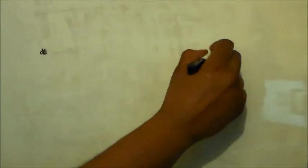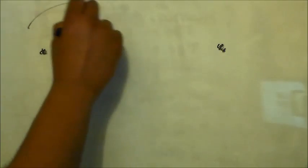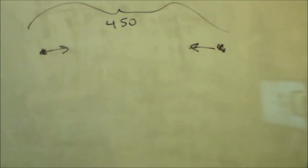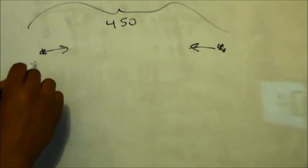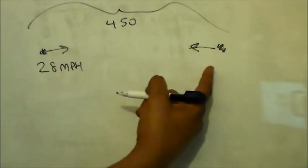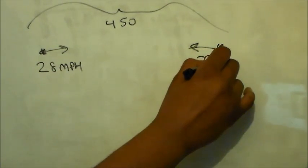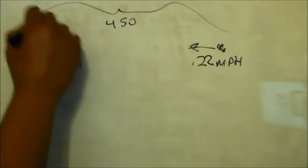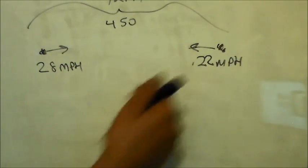Last but not least, we have two boats 450 miles apart, traveling towards each other. One boat is moving at 28 miles per hour and the other at 22 miles per hour. At 12 p.m., these guys start traveling towards each other.